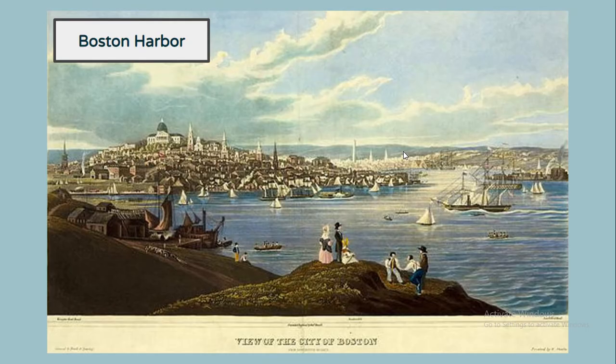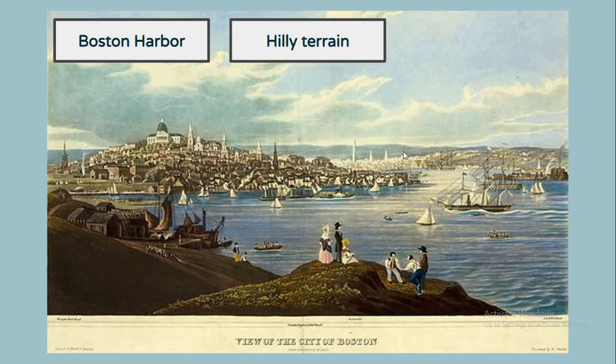Boston was a major port in New England. The next thing I want to point out are the hills that are all around Boston. You can see in the front of the image where the people are, there is some hilly terrain. Terrain is like a fancy word for land. You can also see way back in the distance where it looks like there might be a Capitol building or something — that is also on a hill.